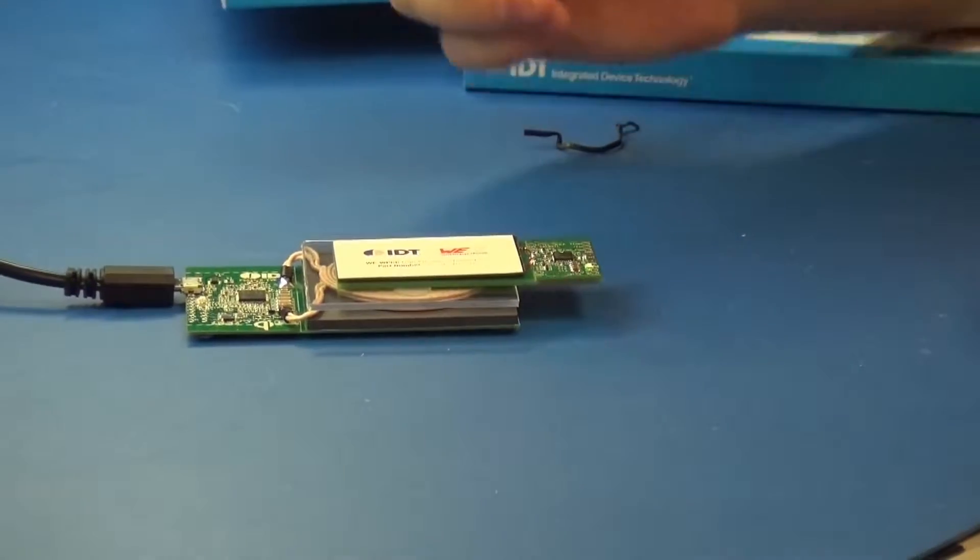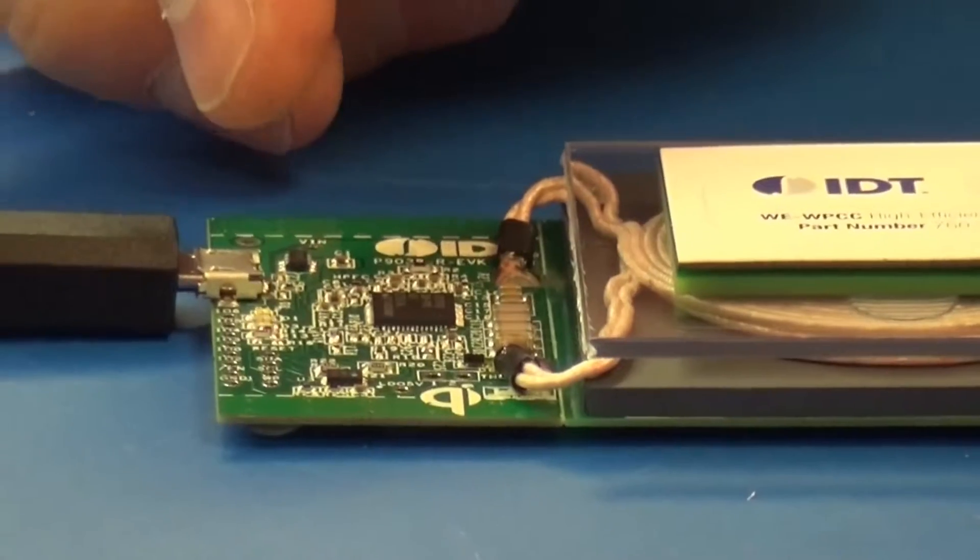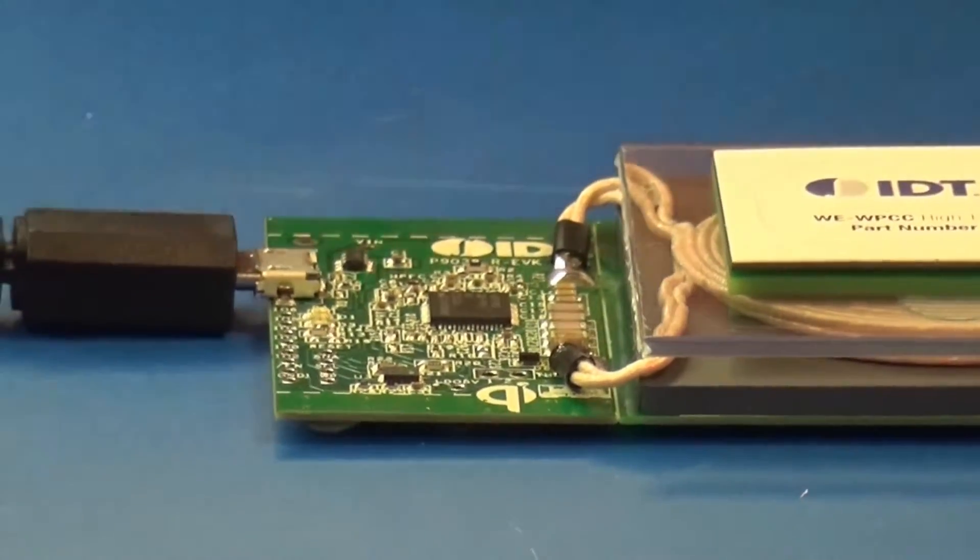And immediately, you'll notice two things. One is the transmitter board LED is now in a steady blinking mode. And that means that it's coupled with the receiver and it's transferring power.